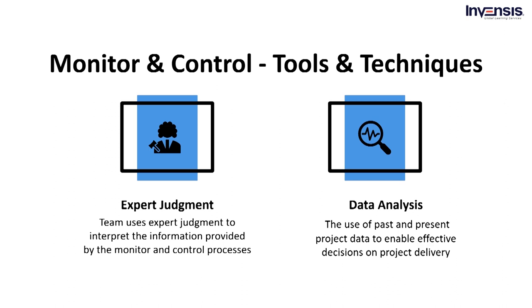The next important tool is data analysis. It is the process that uses past and present project data to enable effective decisions on project delivery. There are six types of data analysis techniques. Firstly, we have alternatives analysis, used to select corrective actions or a combination of corrective actions and precautions to be taken in the event of a deviation in the project management process. Then we have cost-benefit analysis, which helps determine the best corrective action to reduce the cost of project deviations.